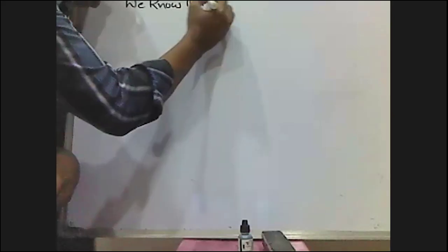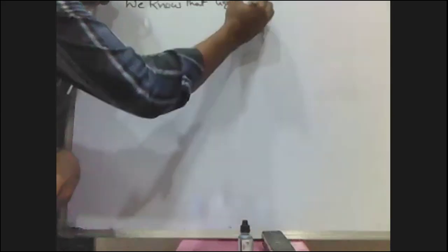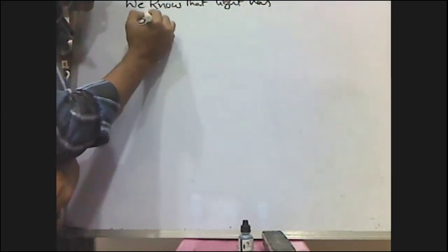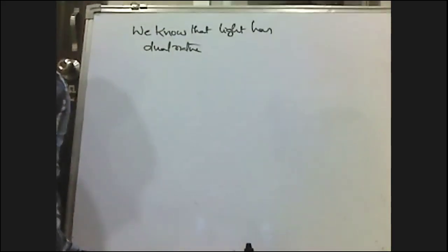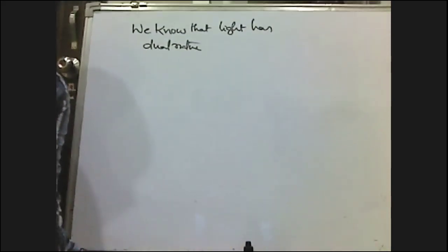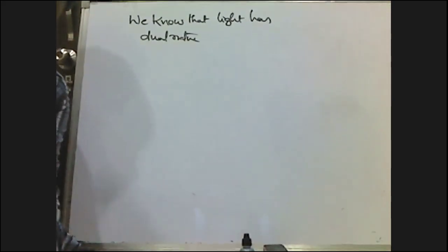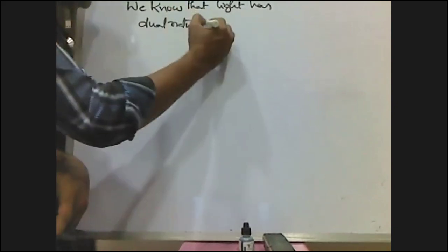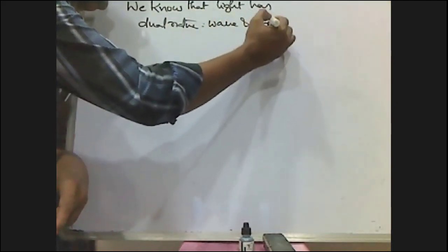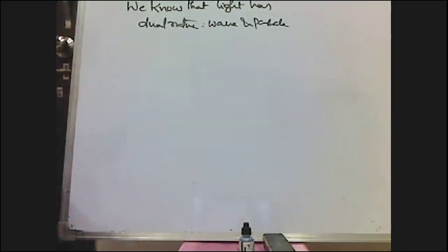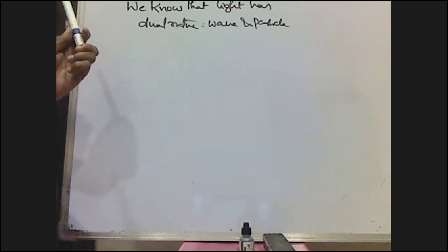So, light or radiation has dual nature. Dual nature means wave nature as well as particle nature — wave and particle nature.